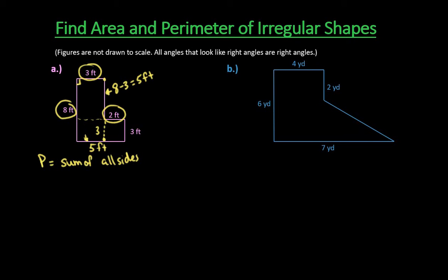So to go through and find the perimeter, all we would do is we would take eight plus three plus five, and I'm just going around starting at this point until I get back to the end. So eight plus three plus five plus two plus three and then plus five again.